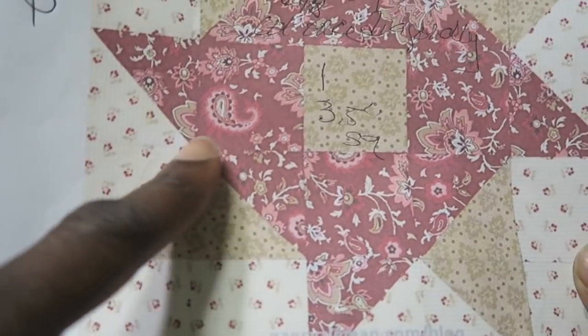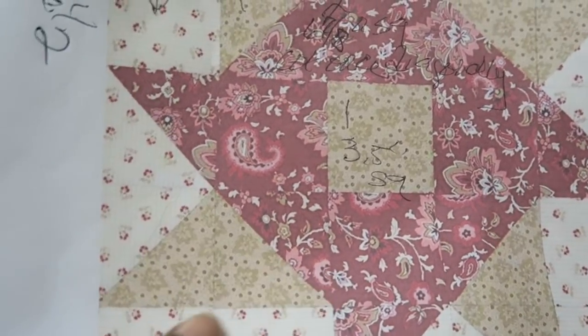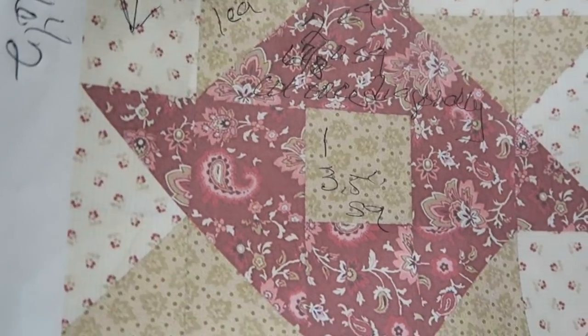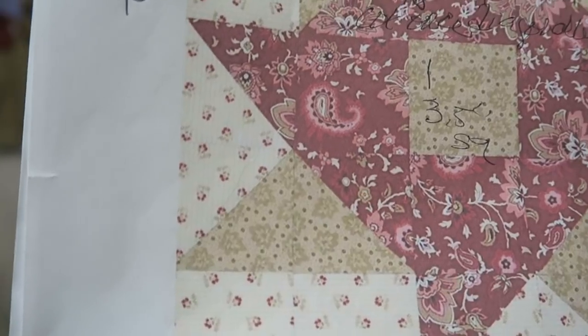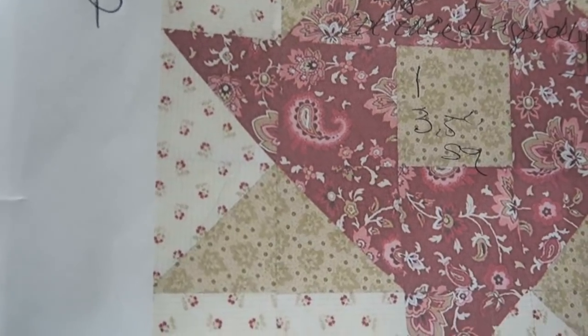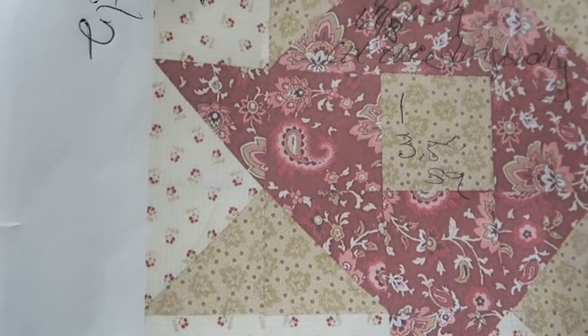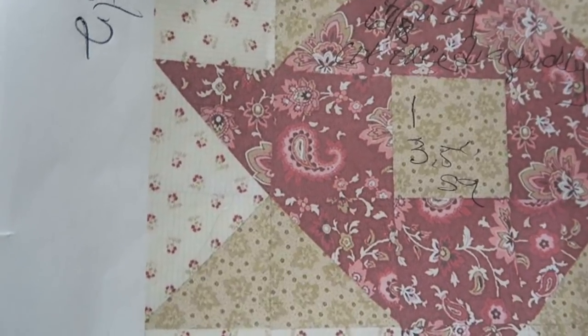And then I need to make this quarter square area here and so I'm going to cut a square from two different fabrics and I'm going to cut them seven and one fourths inch square.